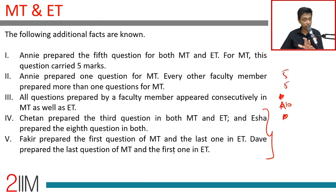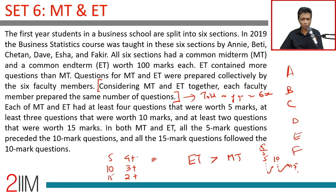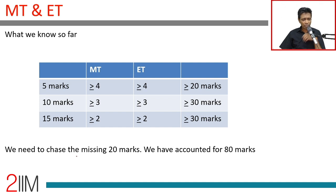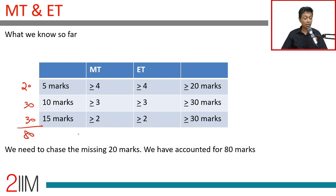The first set of information sets up the stage. The constraints help us determine which teacher prepared which question. First, we want to know how many of each type are in MT and ET and in what sequence. The minimum questions already specified — at least four fives, three tens, two fifteens — account for 20 + 30 + 30 = 80 marks.